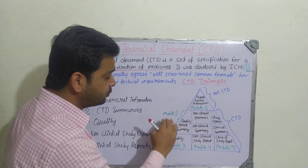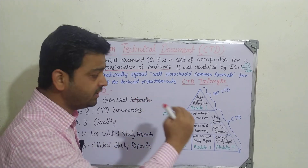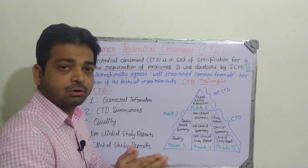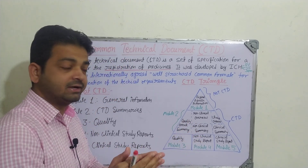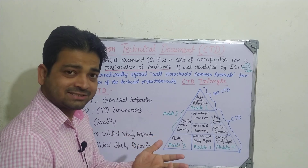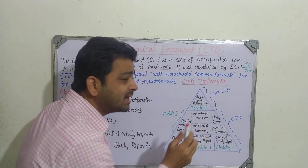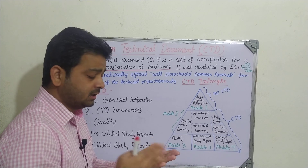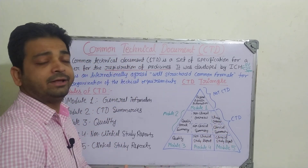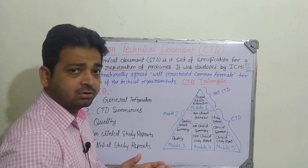Module 2 — CTD Summaries — has five sections. It covers the Quality Overall Summary, which is an overall summary of the particular formulation or pharmaceutical. It also includes the Non-Clinical Overview and Non-Clinical Summary, where information from pre-clinical studies is summarized so the reviewer can assess it. Additionally, the Clinical Overview and Clinical Summary are provided in Module 2, covering Phase 1, Phase 2, and Phase 3 clinical trials — the number of volunteers and how the trials were conducted.